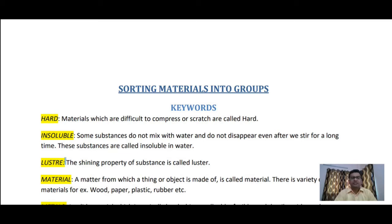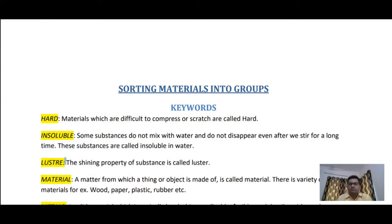The next word is 'material'. Material is the matter from which a thing or object is made. There is a variety of materials — for example, wood, paper, plastic, rubber, etc. Wood is a type of material from which we can make furniture; paper is a type of material from which we can make books, copies, and sheets; plastic can be used to make a variety of objects.